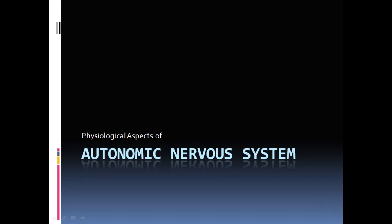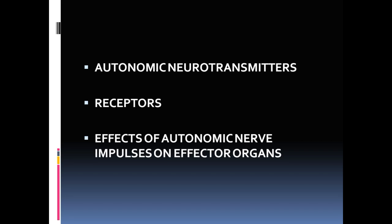Hello and welcome back. In this video lecture, we are going to study about the physiological aspect of the autonomic nervous system. We will cover this topic under three headings: autonomic neurotransmitters, receptors of the neurotransmitters, and effect of autonomic nerve impulses on effector organs.